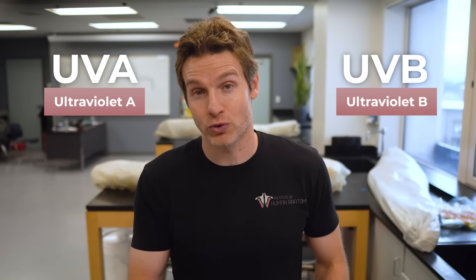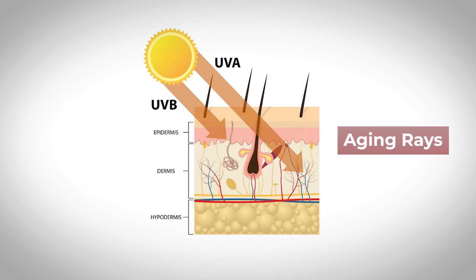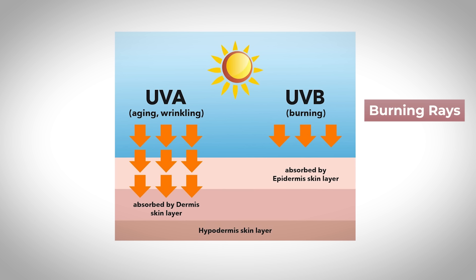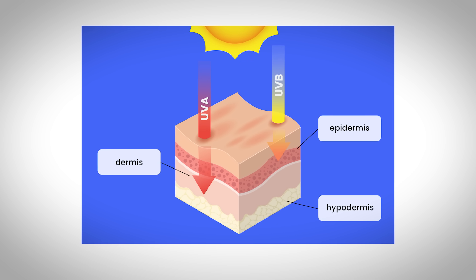UV rays from the sun, or tanning beds, don't treat all these layers the same. There are two main types of UV rays: UVA, which stands for ultraviolet A, and UVB, which stands for ultraviolet B. UVA rays make up about 95% of the UV that reaches us and are sometimes referred to as the aging rays due to their role in long-term skin damage like wrinkles and sagging. They have longer wavelengths that allow them to penetrate deeper into the dermis. UVB rays, sometimes referred to as the burning rays because they're the main culprits behind sunburns, have higher energy photons that can cause more direct damage, but due to their shorter wavelength, they mostly affect the epidermis.